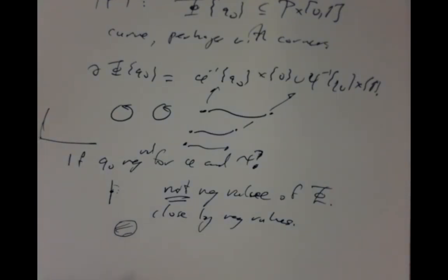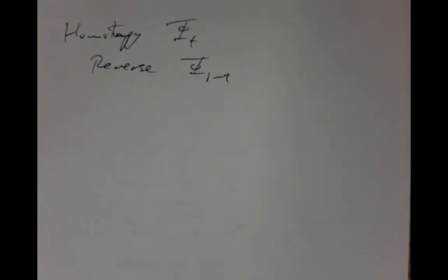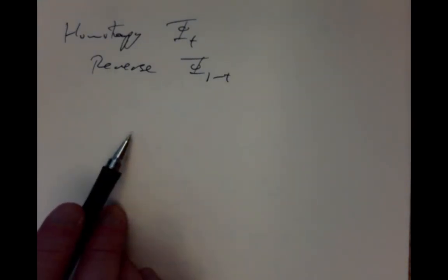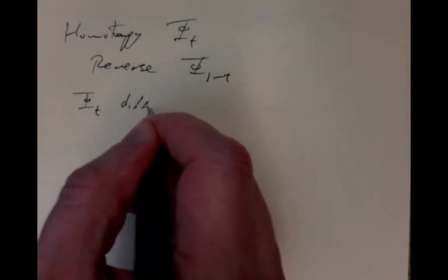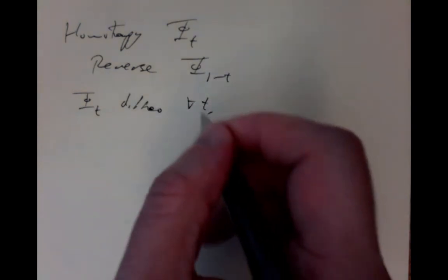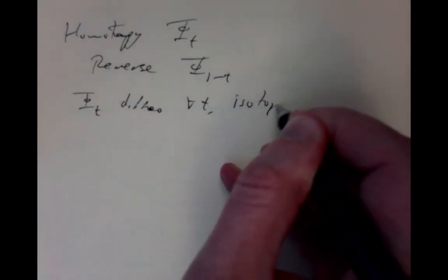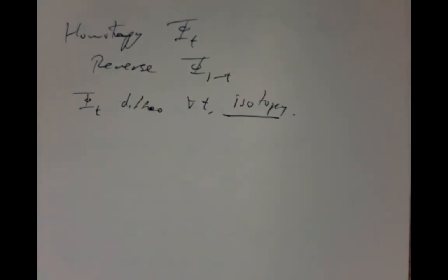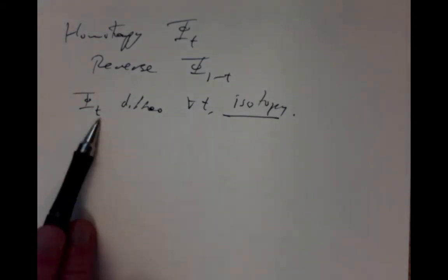Now let's think about diffeomorphisms of manifolds. Given a homotopy φ_t, there is a reverse homotopy φ_{1−t} obtained by reversing the time parameter from going 0 to 1 to going 1 to 0. If φ_t is a diffeomorphism for all t, the homotopy is called an isotopy — a homotopy through diffeomorphisms.